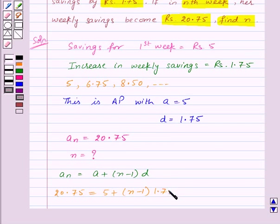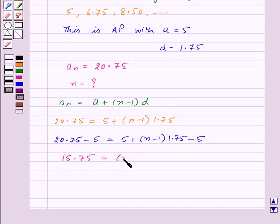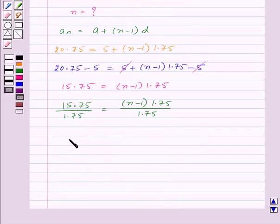Now to find out the value of n, we will solve this equation. And for that we will subtract 5 from both the sides. So we will get 20.75 minus 5 equal to n minus 1 into 1.75. So this will give us 15.75 equal to n minus 1 into 1.75. Now we will divide both sides by 1.75.